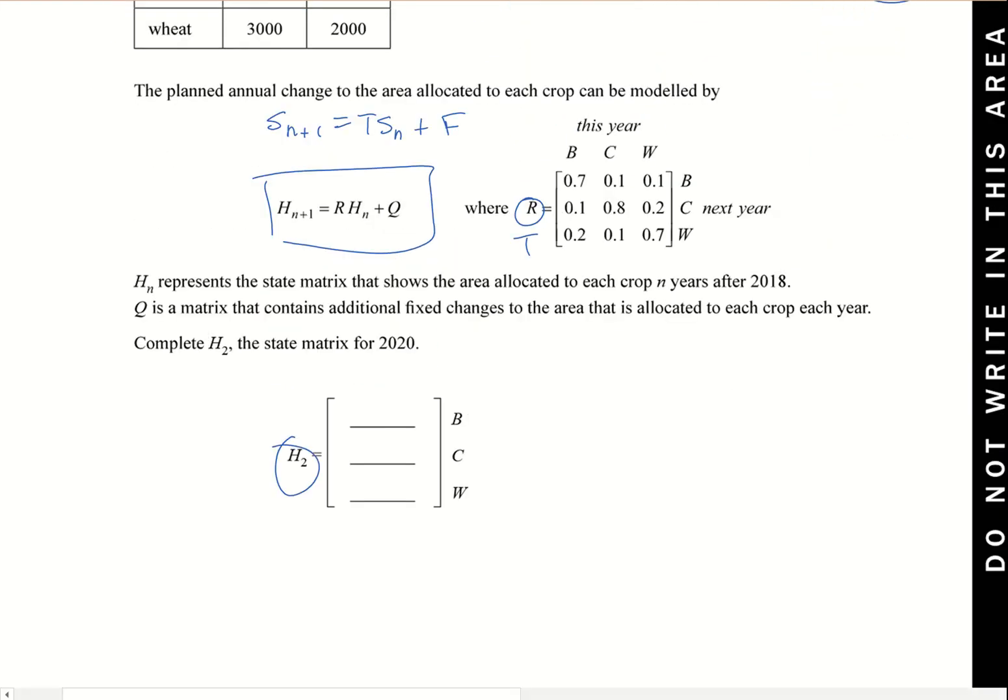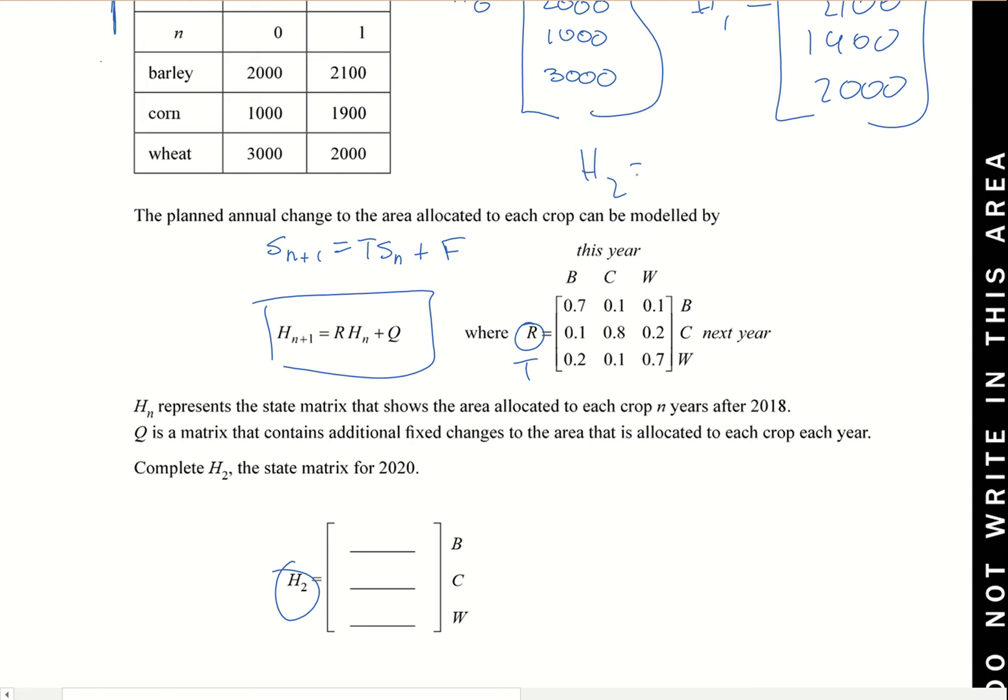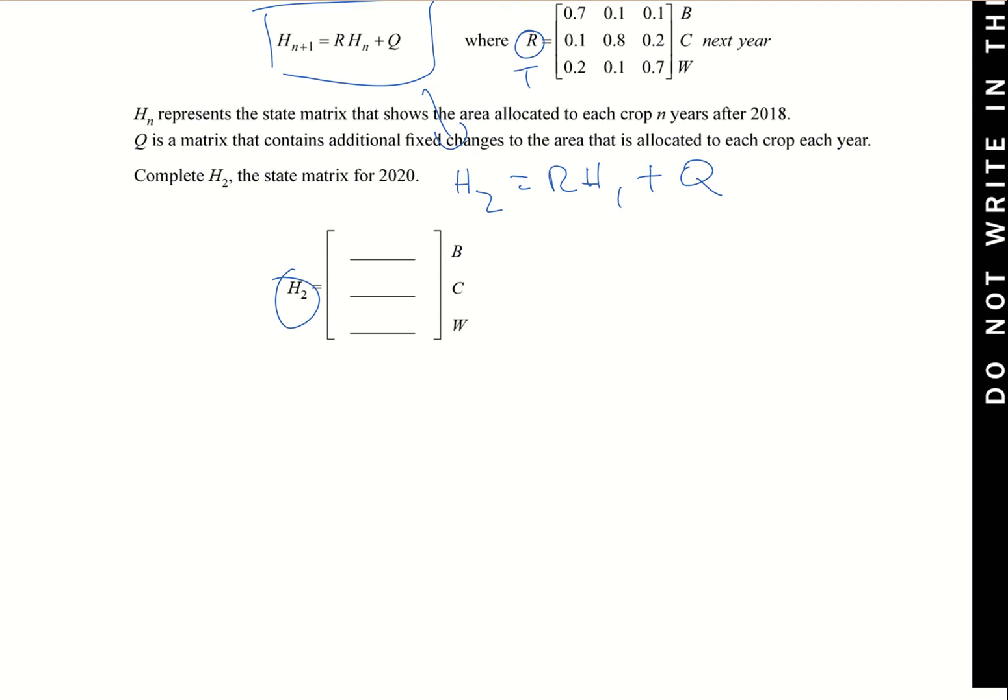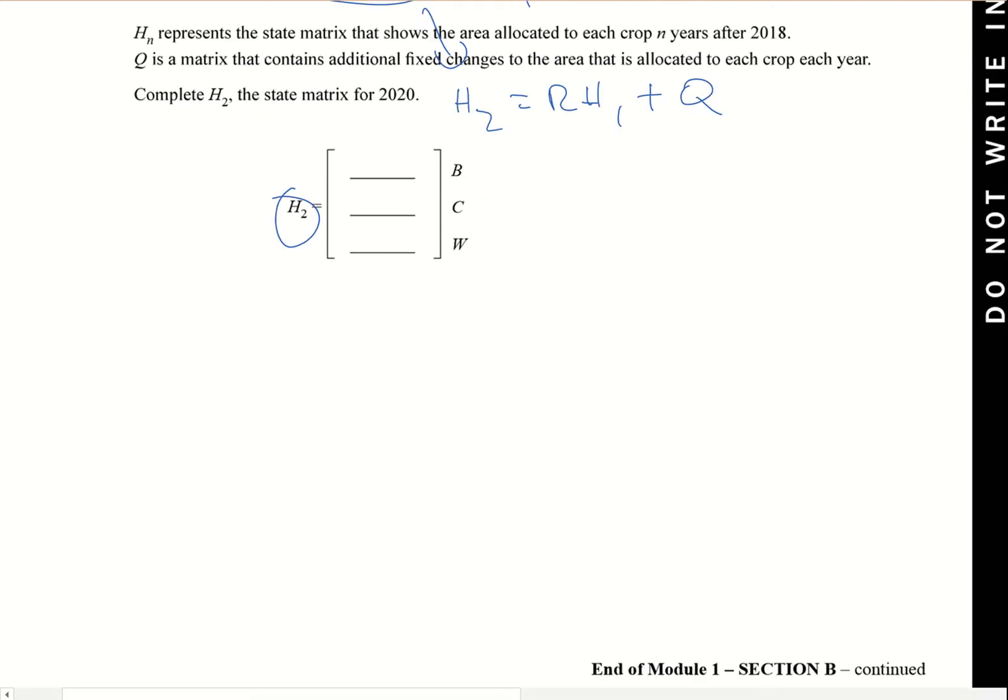Now we've got h0 and h1. What this question is asking for is h2. To get h2, we need h2 equals r times h1 plus q. Now q is the one we don't have at the moment. So q is what we're after - we have to actually work out and solve for q as our first step.